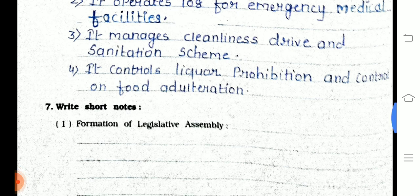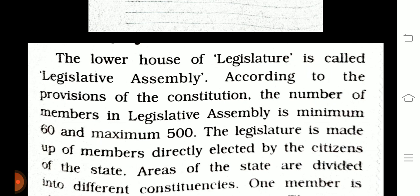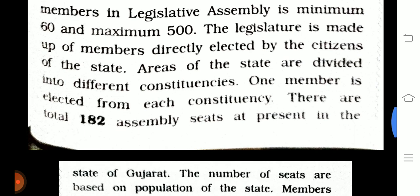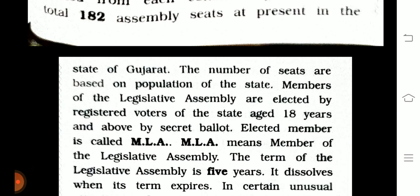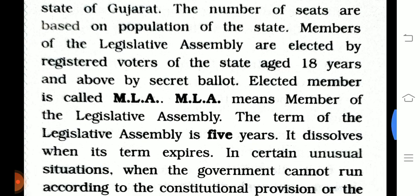Question 7, part 1: Formation of the Legislative Assembly. The lower house of the legislature is called the legislative assembly. According to the constitution, the number of members is minimum 60 and maximum 500. Members are directly elected by citizens. Areas are divided into different constituencies and one member is elected from each. There are 182 assembly seats in Gujarat. Members are elected by registered voters aged 18 and above by secret ballot. Elected members are called MLAs. The term of the legislative assembly is five years.